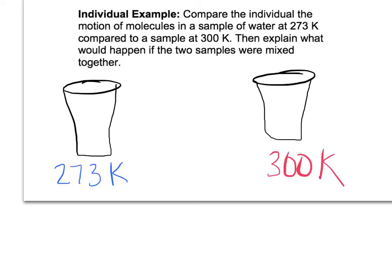Okay, so I have my two cups here. They each have water in them. And one water is 273, and the other water is warmer at 300. What I know is that in the blue cup, or the colder cup, the molecules are moving